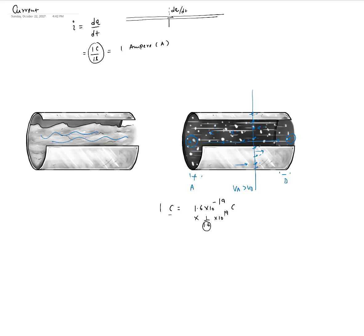The reason electrons take such a long time to travel over a distance is that they face many obstacles — colliding against atoms and other electrons — so their path drifts considerably even though the gross motion is forward. In physics, this drifting is defined by a concept called drift velocity. The drift velocity is much lower than the speed at which the disturbance sets in, which defines the flow of current, and that speed is close to the speed of light.